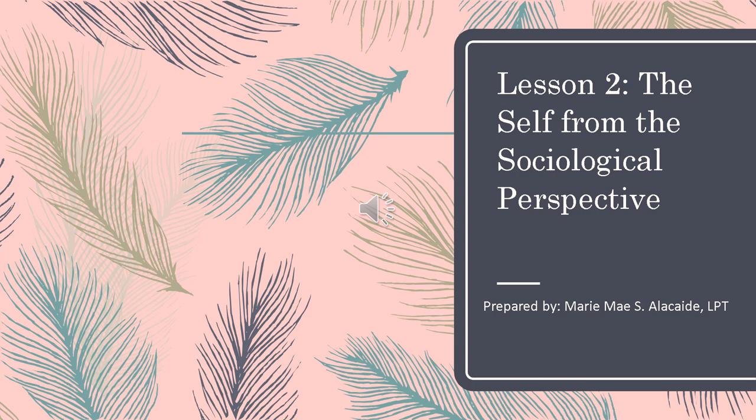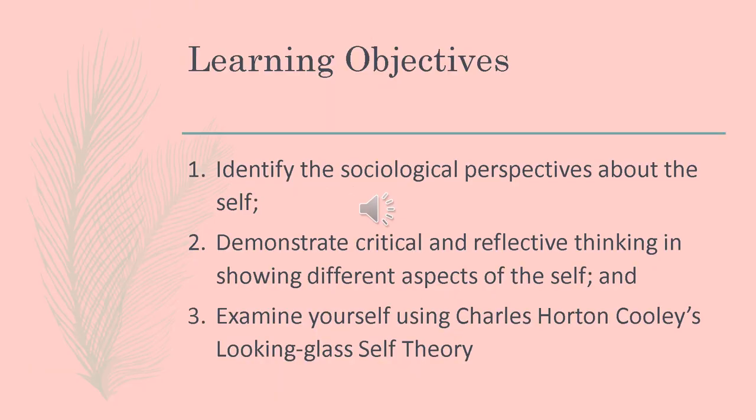Good morning or good afternoon, students. Welcome to GE 1: Understanding the Self. For this discussion, we're going to continue what we have discussed last meeting. Let's proceed to Lesson 2: The Self from the Sociological Perspective. At the end of this discussion, you are going to identify the sociological perspectives about the self, demonstrate critical and reflective thinking in showing different aspects of the self, and examine yourself using Charles Horton Cooley's Looking Glass Self.